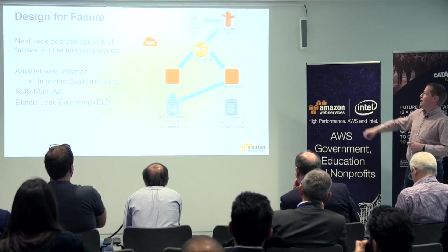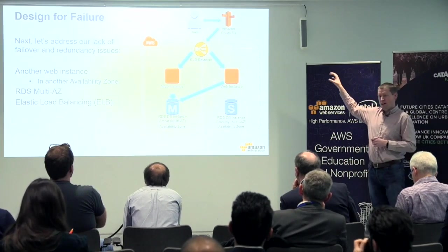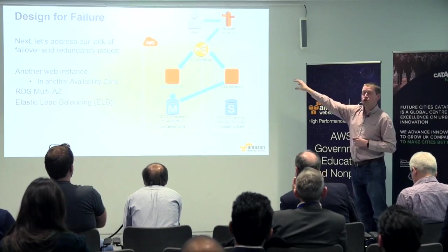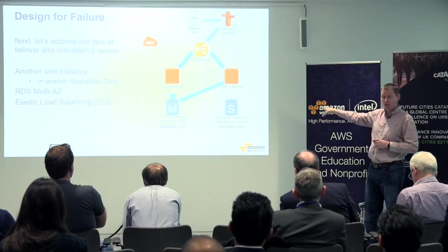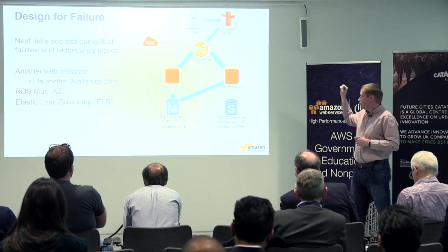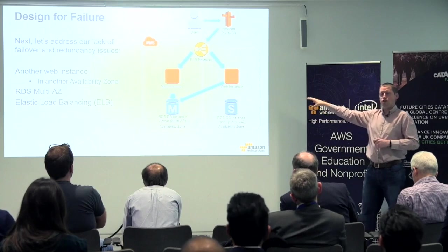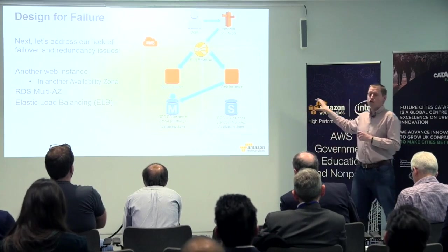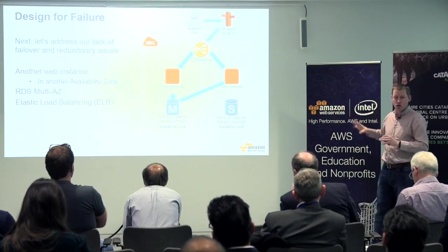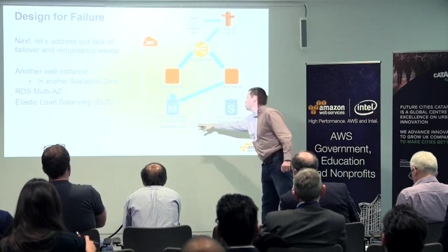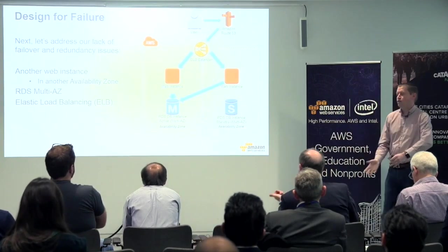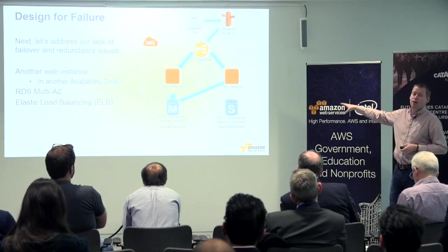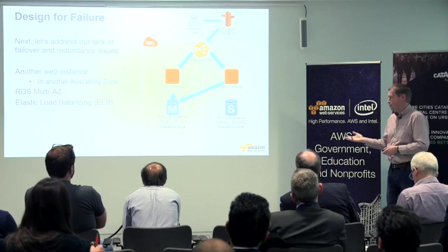So let's design for failure. Let's put a load balancer in front and distribute the web traffic across multiple front-end web servers, so that if one goes down, the load balancer directs traffic to the remaining instances. Similarly with the database, we now have a managed database service called Relational Database Service that can do active-passive with automatic failover. We've spread the service across multiple availability zones, so the impact of a single availability zone failure won't affect the whole service. Design for failure and nothing should fail.